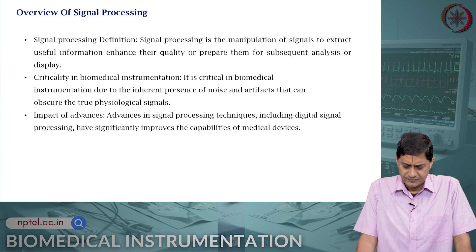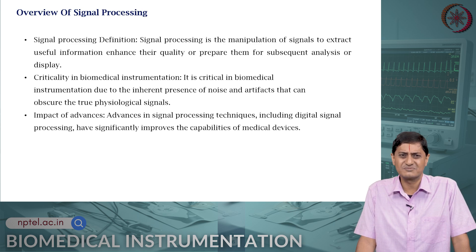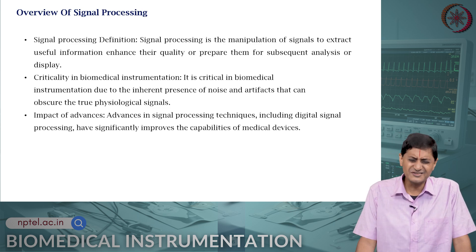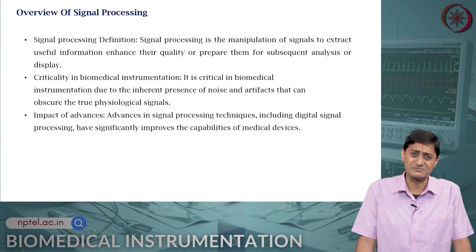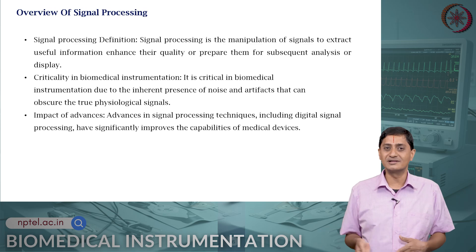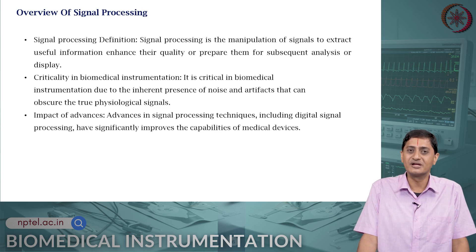Critically in biomedical instrumentation, you need to have a high signal-to-noise ratio because of inherent noise present in the system and some artifacts that obscure or obfuscate the true physiological signals. You actually do not have an idea of the true signals — it is very difficult to get the true signals. This is true in many engineering systems, but it is more true in biomedical or physiological systems.